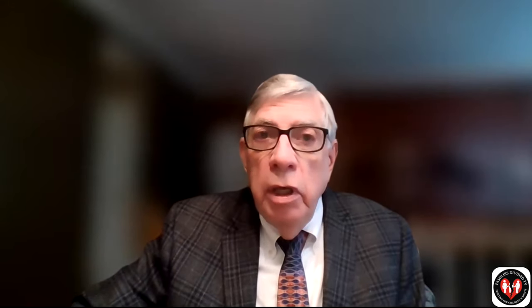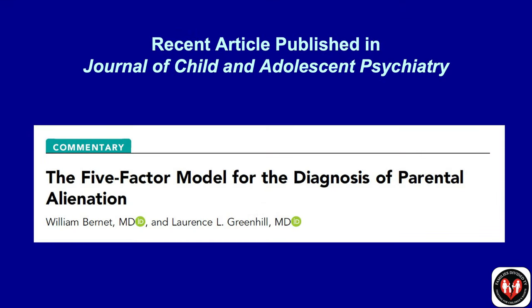Dr. Ray and I are going to talk about the research that helps form the basis of parental alienation theory — what kind of research exists to show that parental alienation really exists and can be determined in a reliable and valid manner. The first step is to make sure we have the same definitions. There's an important article published about a year ago in the Journal of Child and Adolescent Psychiatry about the five-factor model for the diagnosis of parental alienation.